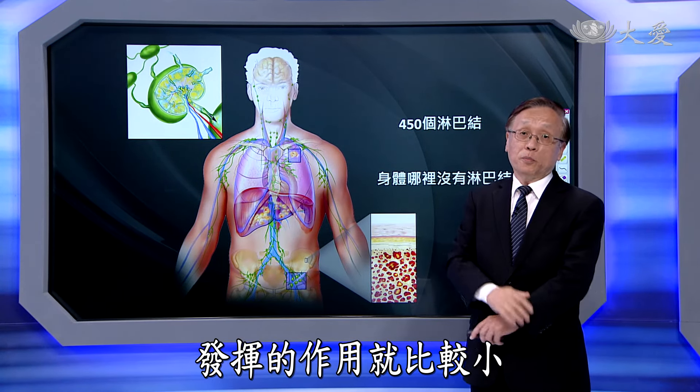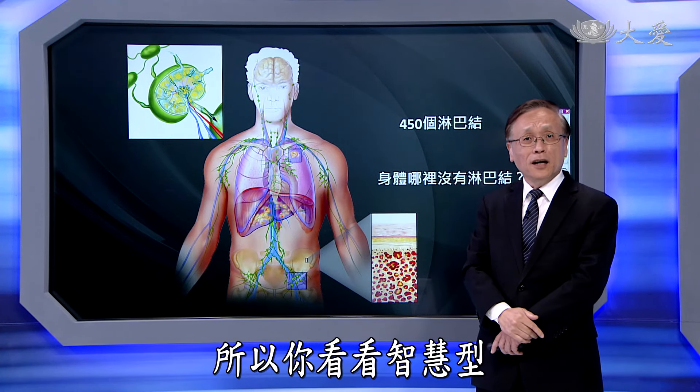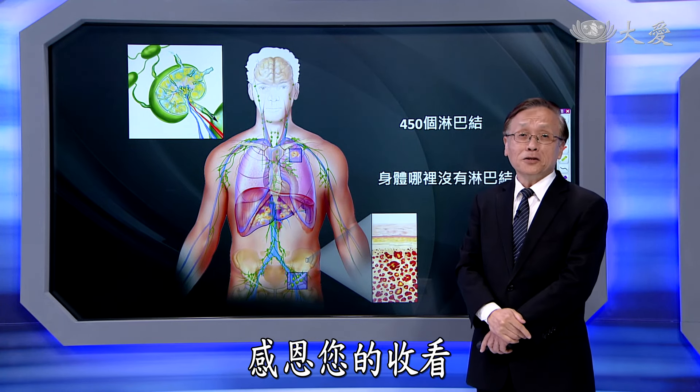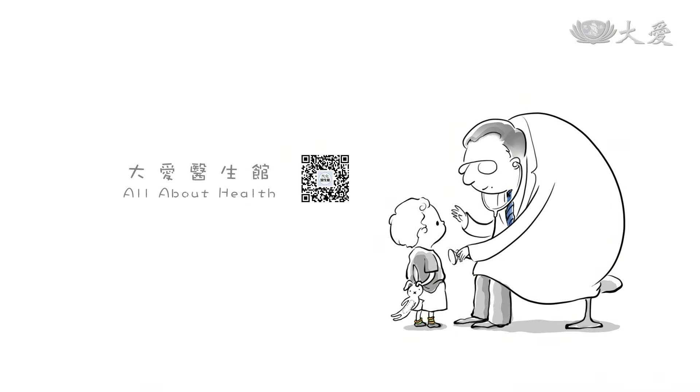刚才请问大家身体哪里没有淋巴结，答案是脑里面。脑里面没有淋巴结，因为我们有血管跟脑之间重重的保护，淋巴结在那个地方发挥的作用就比较小。这种智慧性的调控都是让人钦佩的地方。大家可以安排多好，我们下期再见。